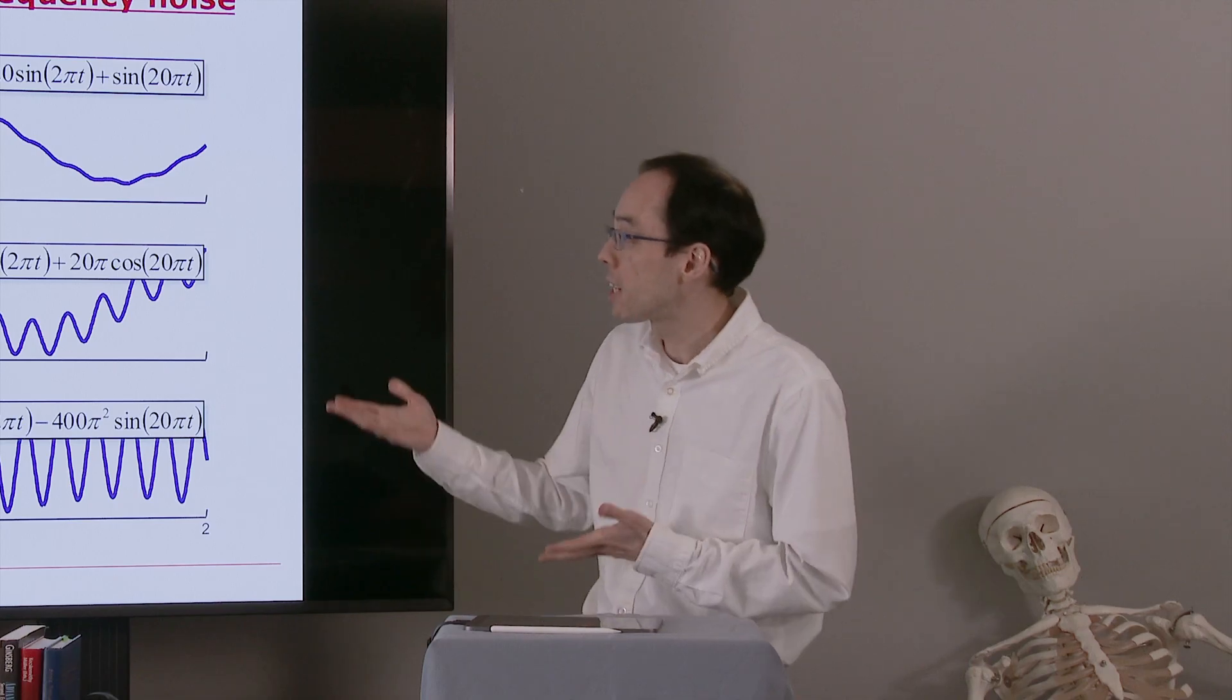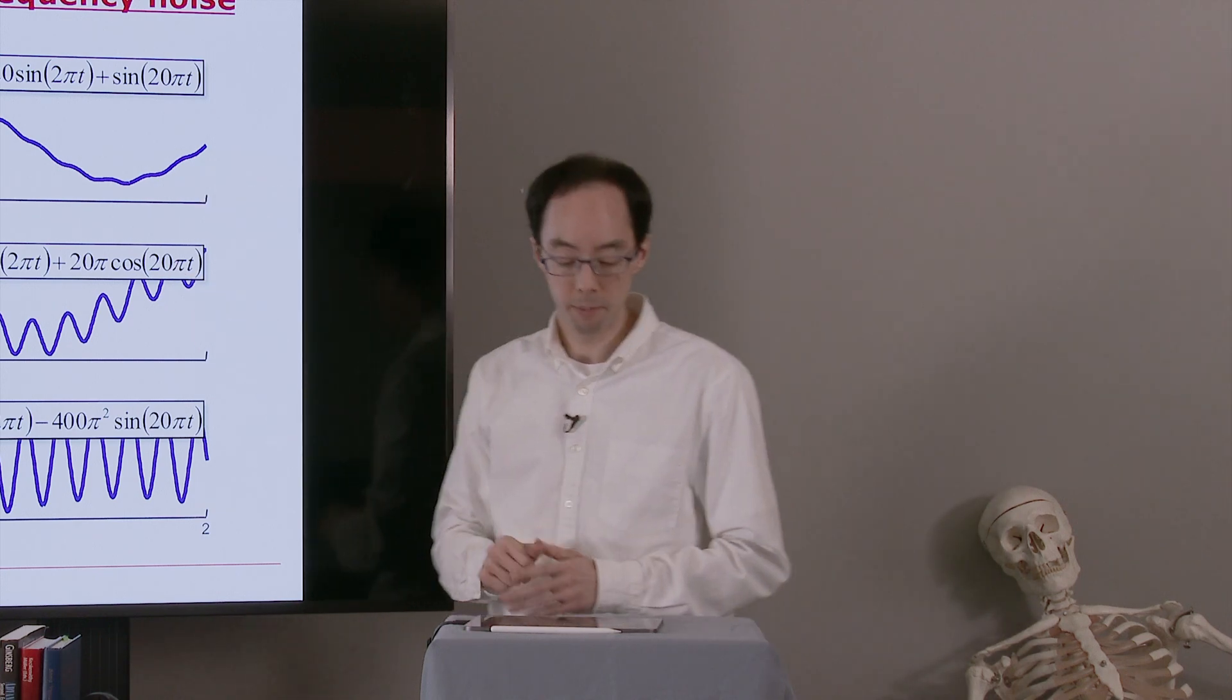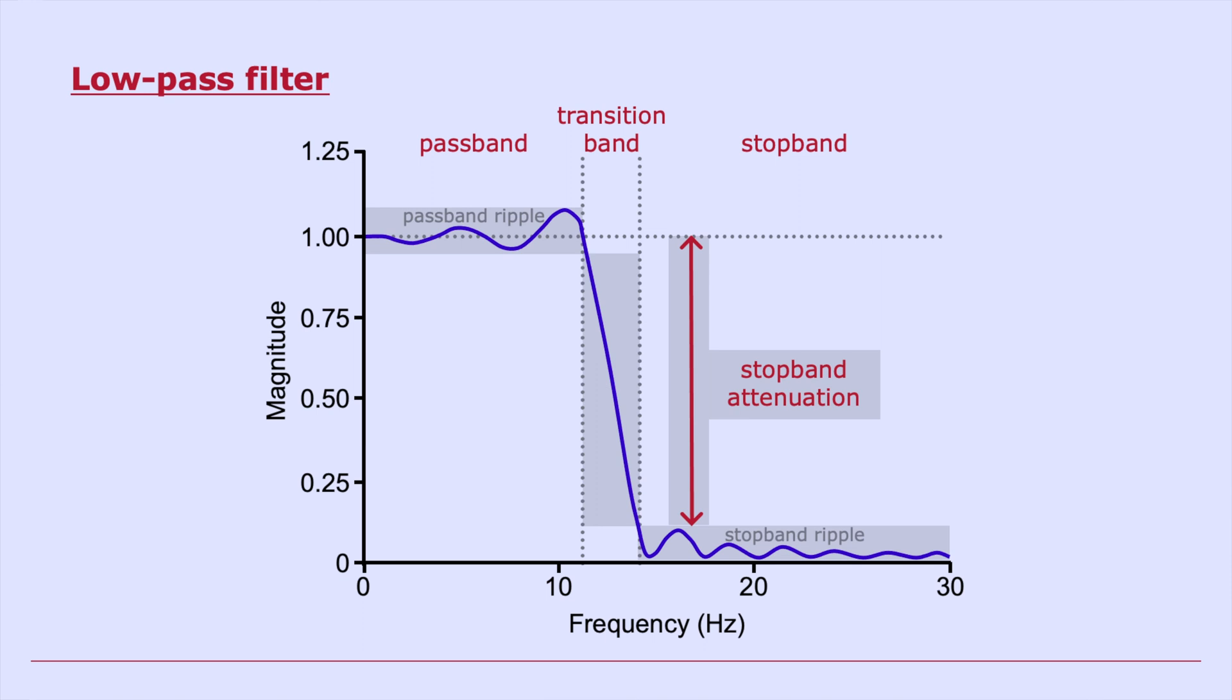So how do we get around this? One thing we could do is filter our signal before taking a derivative. Here's an example of a filter. We need to decide, critically, what is the transition band or what's the filter cutoff frequency.